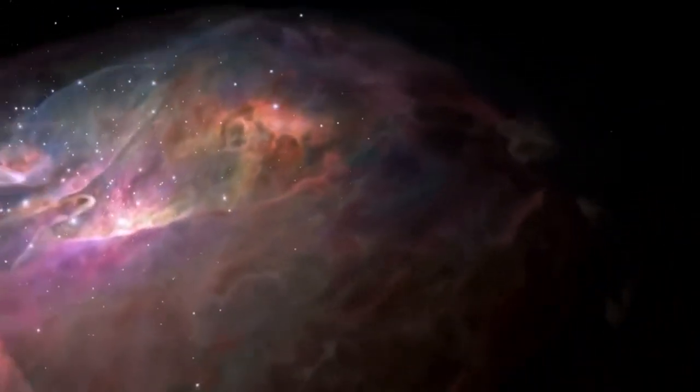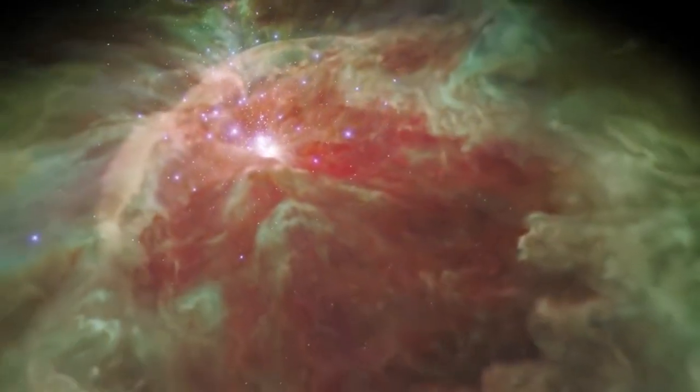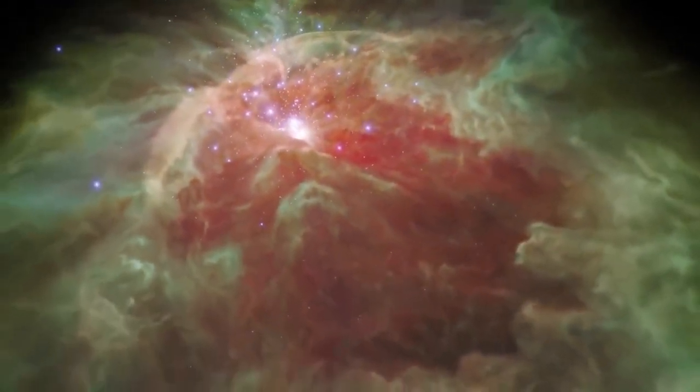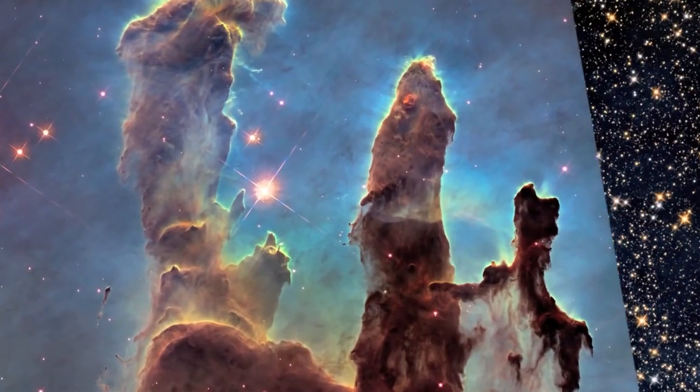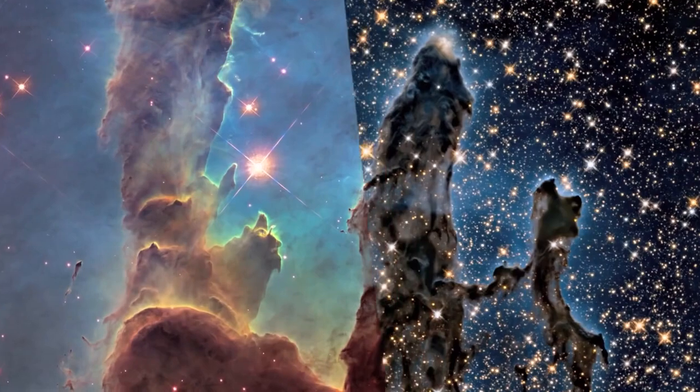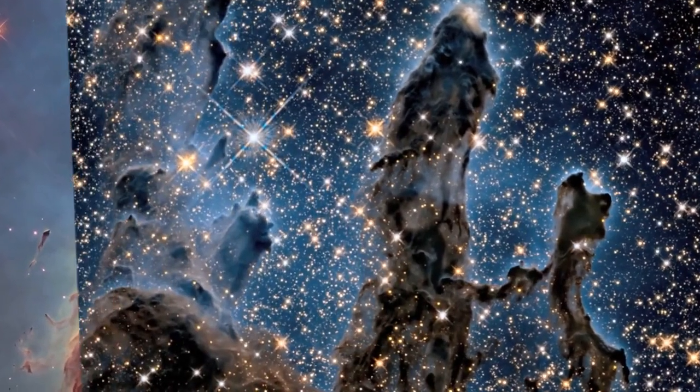Webb saw two separate objects, where Hubble only saw a small dot. Both Hubble and Webb use gravitational lensing to learn more about the early universe. This is what happens when a group of galaxies in the far distance is so big that it bends space-time and bends the light from galaxies far away behind it.